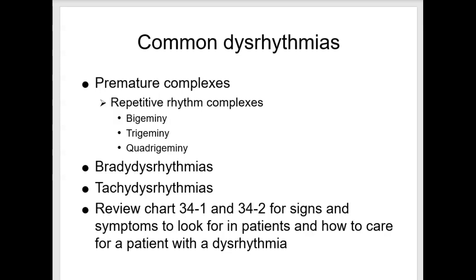A tachydysrhythmia would be a heart rate greater than 100. There are major concerns in the adult patient with coronary artery disease, as coronary artery blood flow occurs mostly during diastole when the aortic valve is closed, determined by diastolic time and blood pressure in the root of the aorta. Tachydysrhythmias are serious because they shorten the diastolic time and therefore the coronary perfusion time, since those coronary blood vessels fill up and supply blood to the heart tissue during diastole.